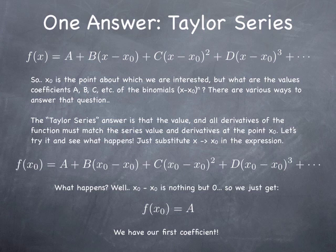Well, the way Taylor series answers that question is to first set the value of x to x0 and demand that the series matches the value of the function. Well, if you do that, you'll notice that the coefficients b, c, and d don't matter. All that matters is the coefficient a, and the coefficient a turns out to be nothing other than the value of the function at x0. So we have our first coefficient.